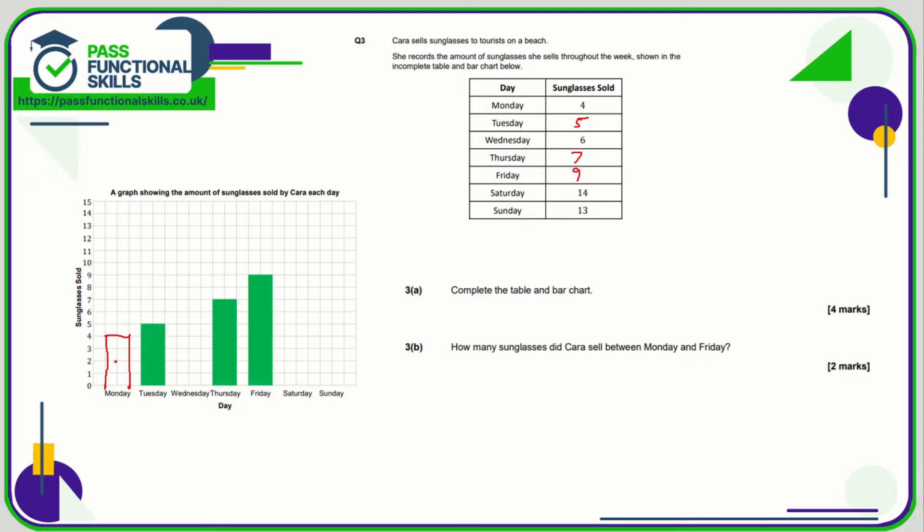Wednesday needs to go up to 6, which is there. Saturday goes all the way up to 14, so that's almost to the top. Again, better if you can use a ruler to create a straight line as I'm just freestyling it. And Sunday is 13, which is this point here.